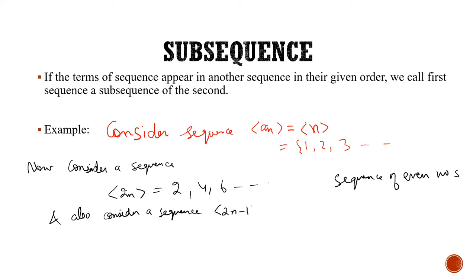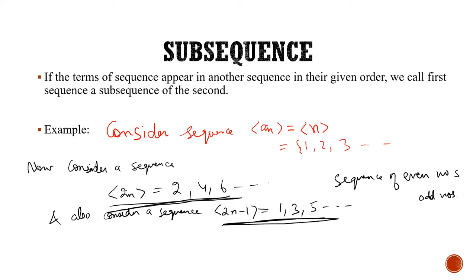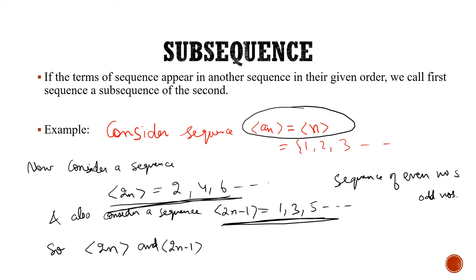And consider a sequence 2n minus 1, which will be equal to 1, 3, 5, and so on — the sequence of odd numbers. Clearly, the sequences 2n and 2n minus 1 lie within the sequence a_n = n (which is 1, 2, 3, ...). So we can say that 2n and 2n minus 1 are subsequences of the sequence n. I hope this definition of subsequence is clear.